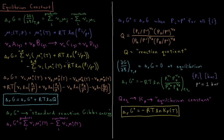Rearranging this expression in terms of its different terms, we get ΔrG equals a sum of ν_C times μ_C°, so for each species we get its stoichiometric coefficient times its standard chemical potential, with subtraction for reactants and addition for products, plus terms that depend on RT times the natural log of pressure divided by standard pressure times the coefficient. This rearranges into: ΔrG = ΔrG° + RT·ln(Q), where Q is the reaction quotient.